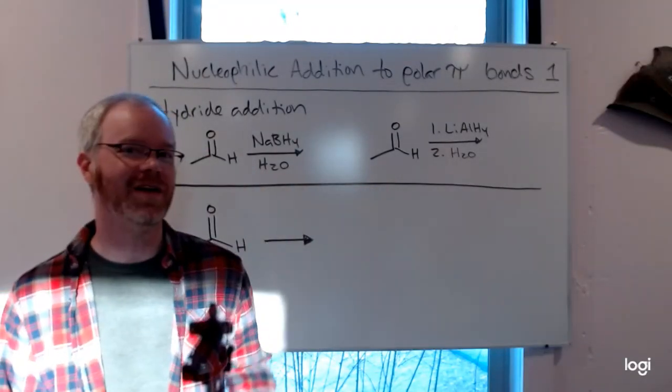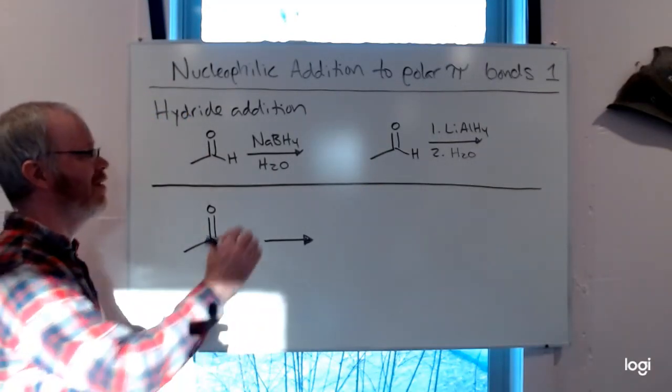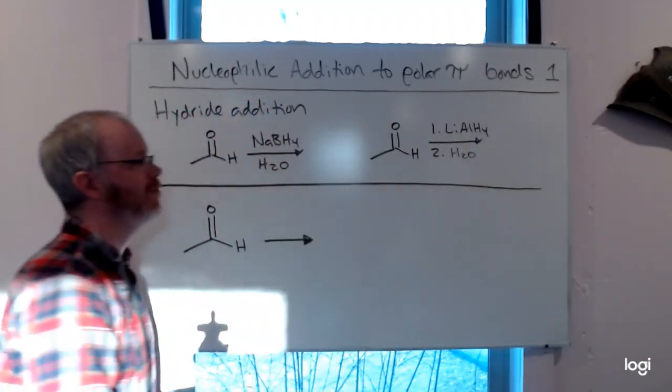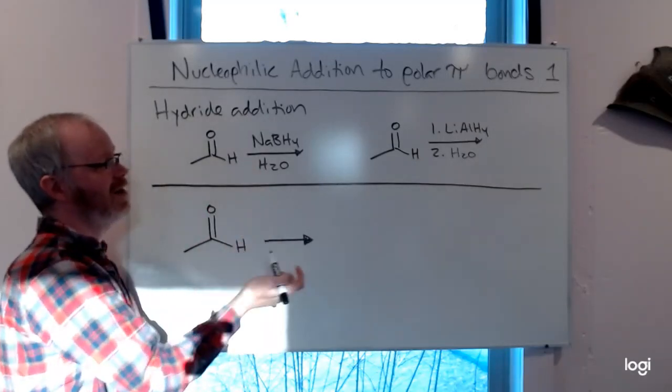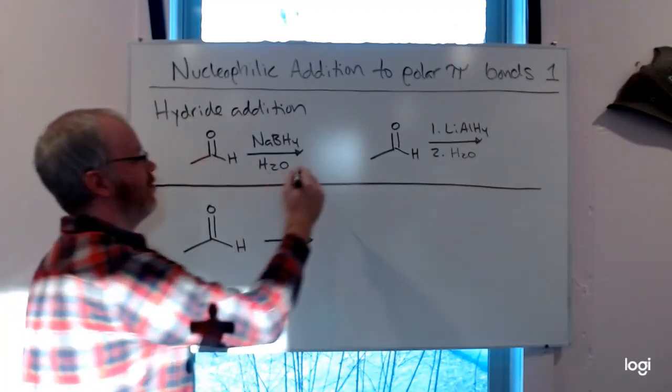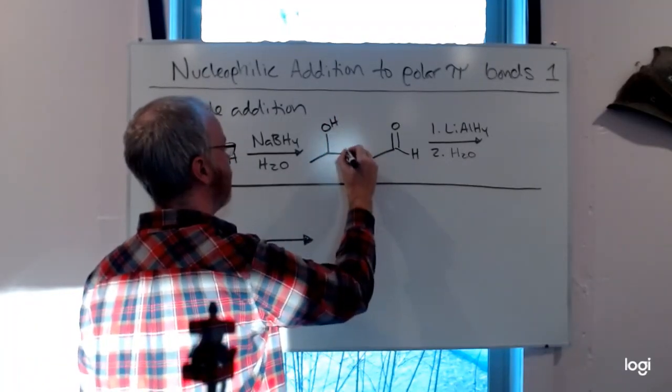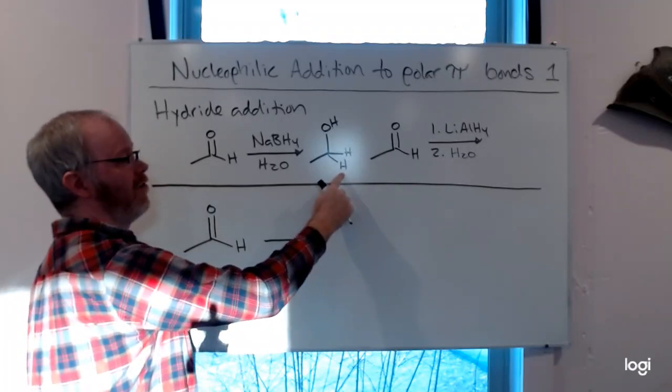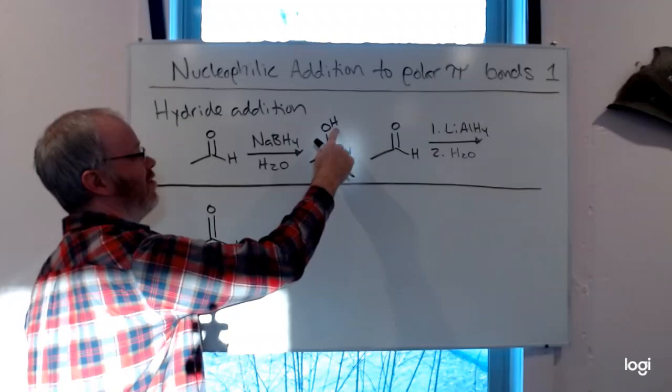We're doing hydride addition. So this is a simplification of a mechanism, but sodium borohydride with water or lithium aluminum hydride in water will act and add hydride, H-, to essentially reduce the aldehyde down to an alcohol. So new hydrogen bonded to that carbon, double bond's gone, hydrogen up on the oxygen.